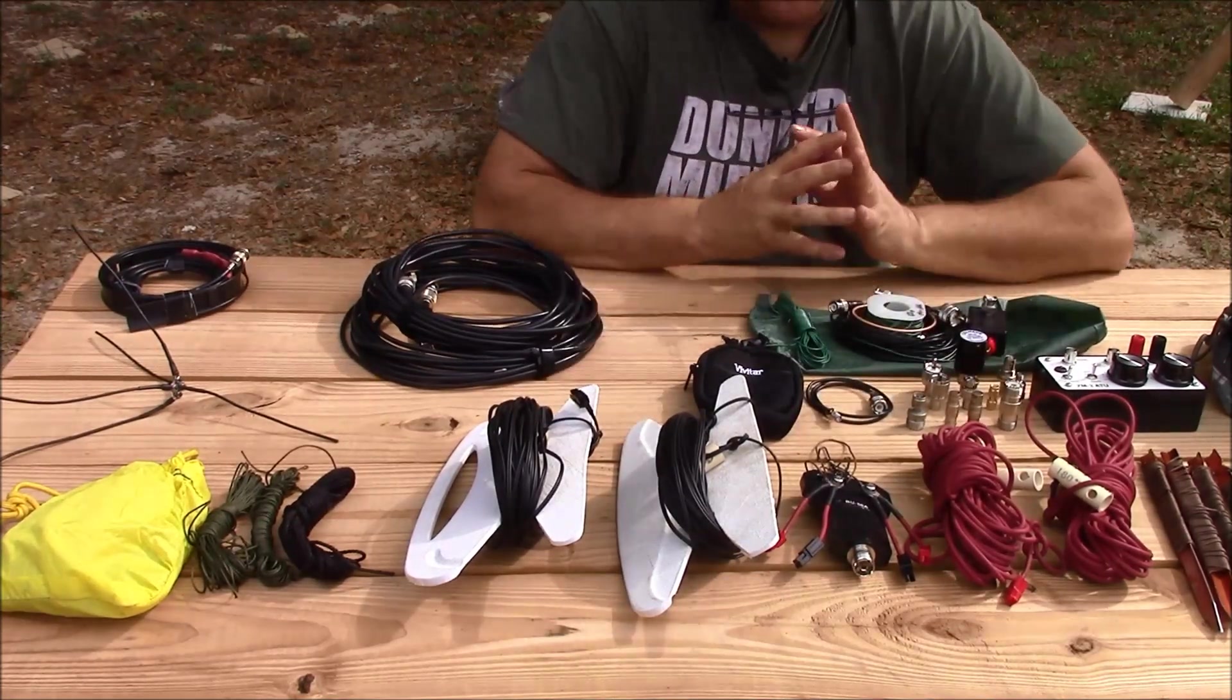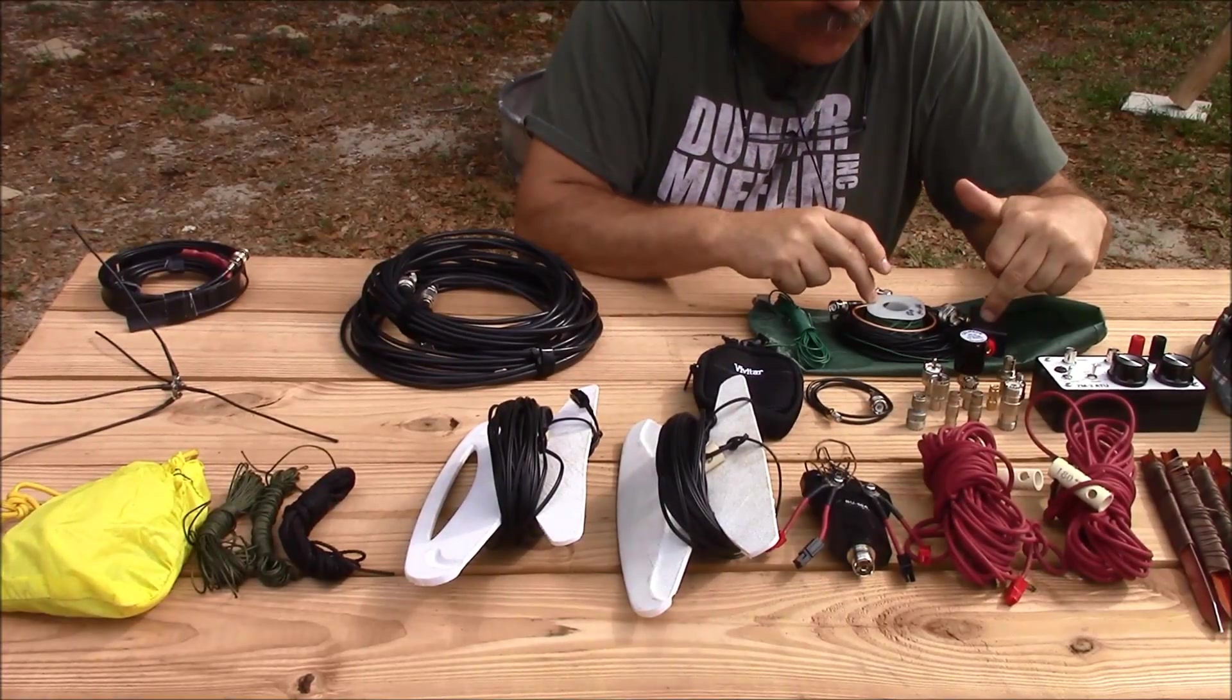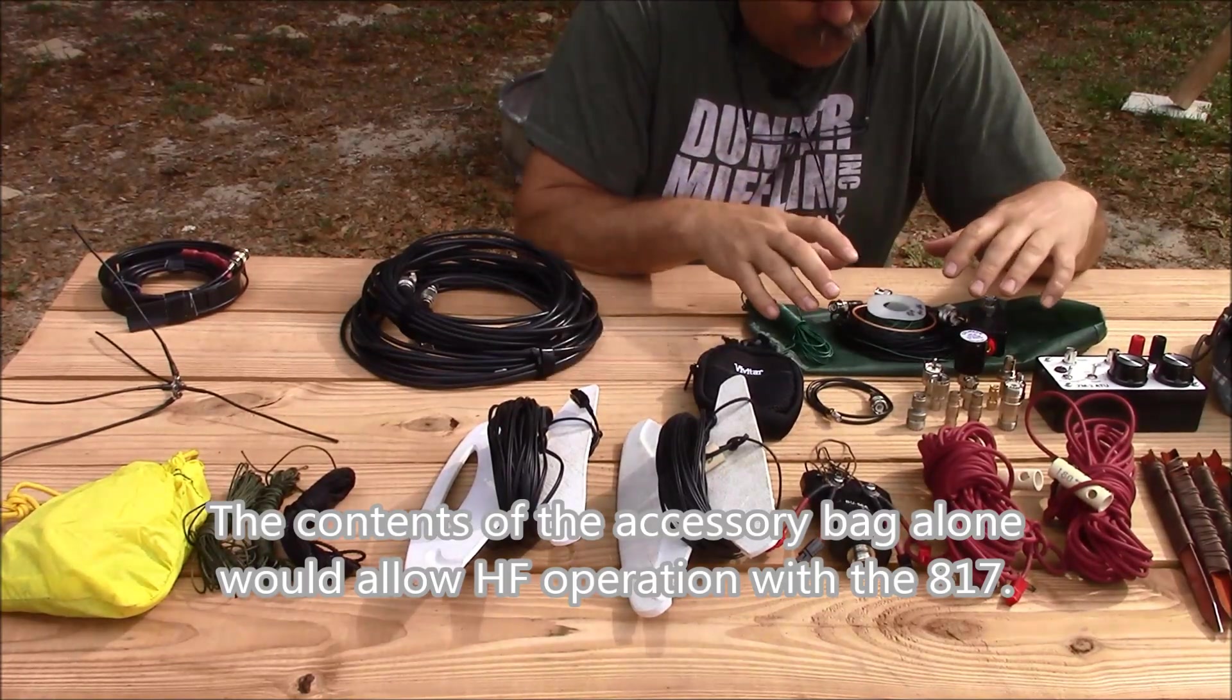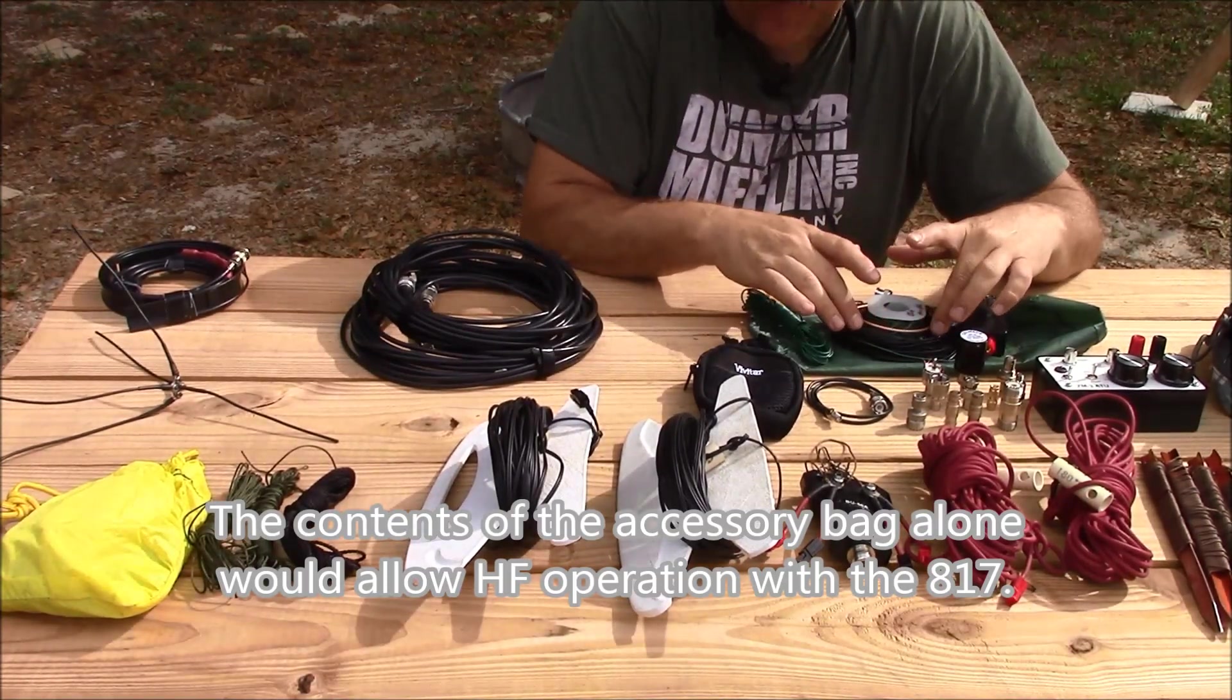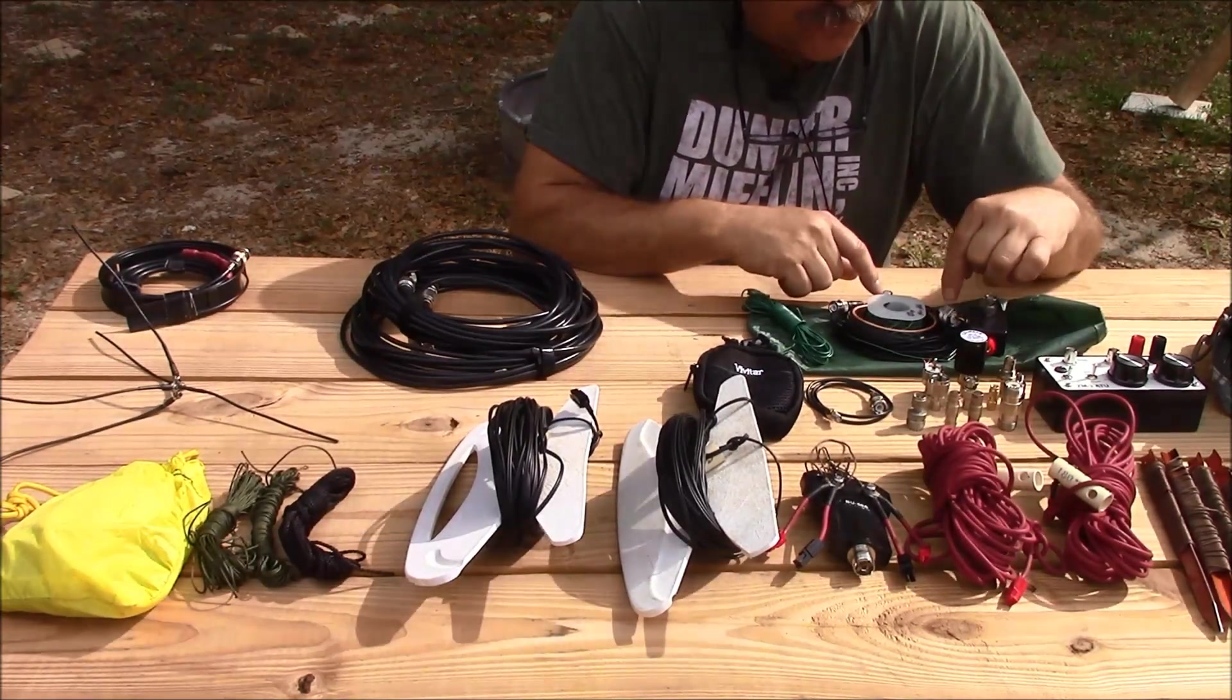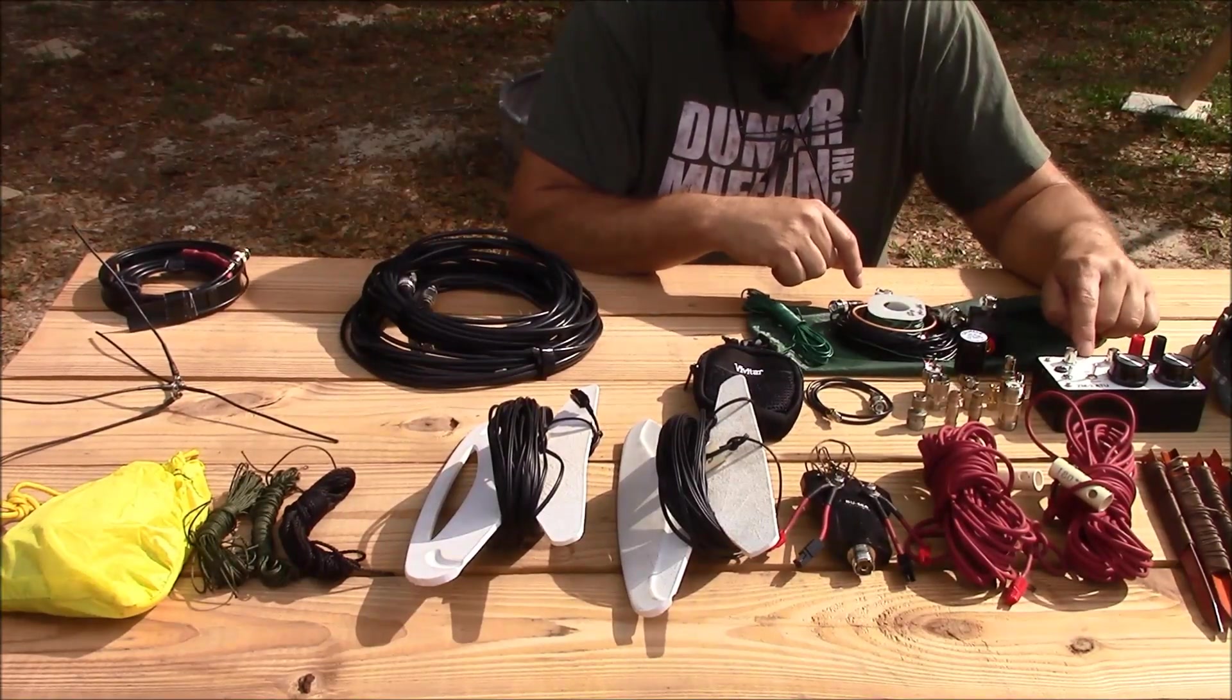This right here is the contents of my accessory bag. I have a 62-foot NFED HF antenna, and this is the 25-foot counterpoise wire for it. Also, I have 25-foot feed line here, and I have a small BNC to PL-259 jumper to hook it to my tuner.